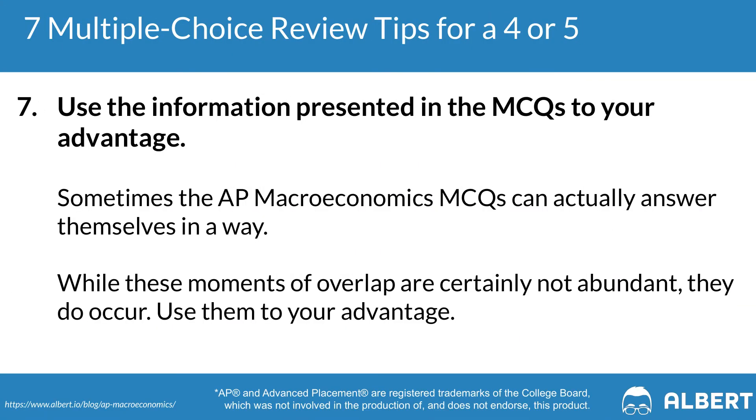Our last AP macroeconomics multiple choice tip is to use the information presented to you throughout the exam. For example, you might encounter a question earlier in the exam asking you to examine growth in the aggregate demand–aggregate supply model and analyze a trend in a graph. Later, you might see another question relating back to the AD-AS model. Even if AD-AS models aren't your strong suit, you can use the information from the earlier question and apply it to the later one. By thinking about how to piece everything together, you can potentially earn points you might not have gotten otherwise.